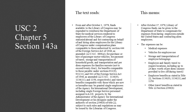This means: After October 1, 1978, Library of Congress funds can be given to the Department of State to compensate for expenses from having employees outside the United States and contracting alien employees. The expenses can include medical expenses, vehicles for employee use, storage and transportation of employee belongings, and employee and family travel to required locations, including up to 24 days' worth of per diem — money provided to live off during travel.